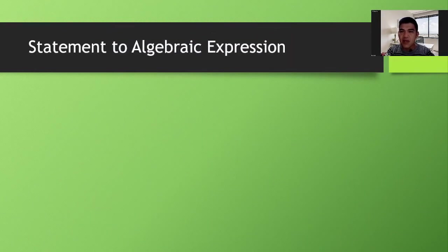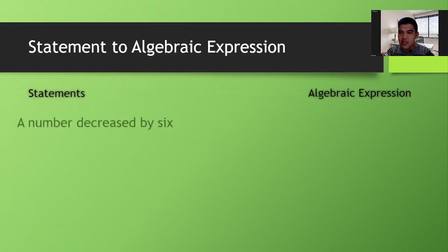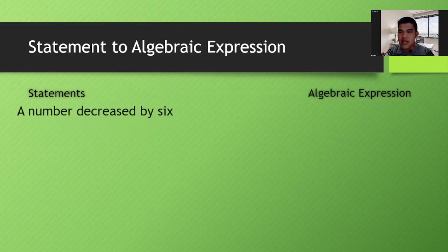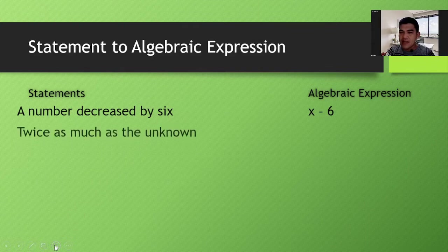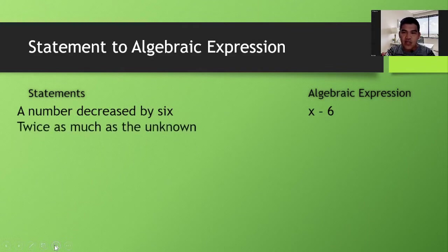Now let's translate statements into algebraic expressions. The first one: 'a number decreased by six.' We usually denote the unknown by the letter x, though you can use any letter. If x is the number, you decrease it by six, so that becomes x minus 6.